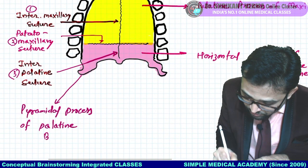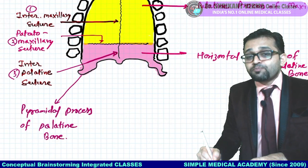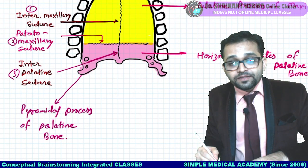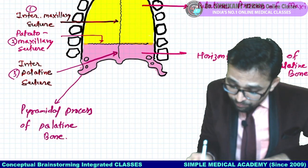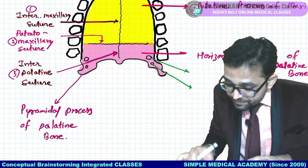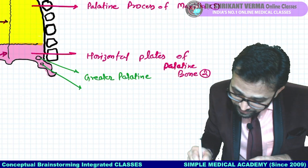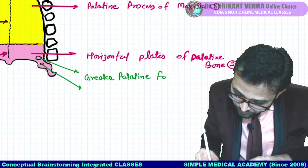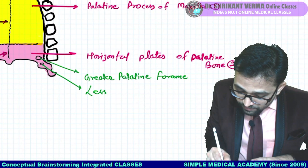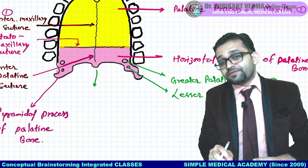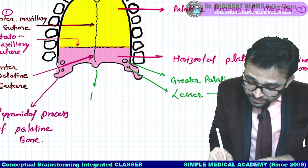The bigger foramen is the greater palatine foramen, and the smaller one is the lesser palatine foramen. These are important MCQs — viva and MCQ osteology questions. The greater palatine nerve passes through the greater palatine foramen, and the lesser palatine nerve passes through the lesser palatine foramen. Behind the nose there is a bony process — that is the posterior nasal spine.